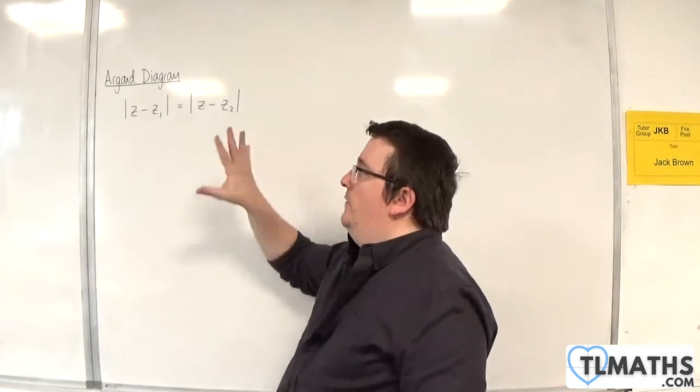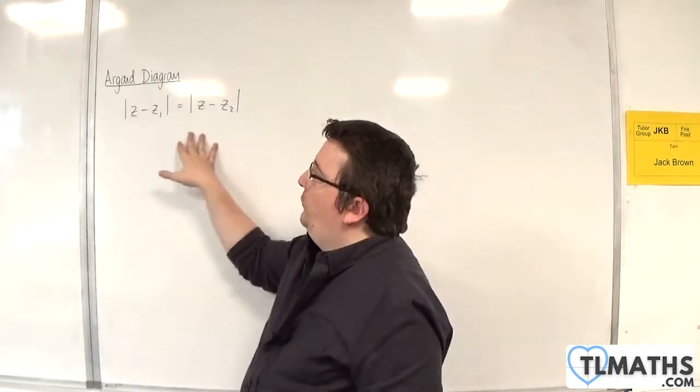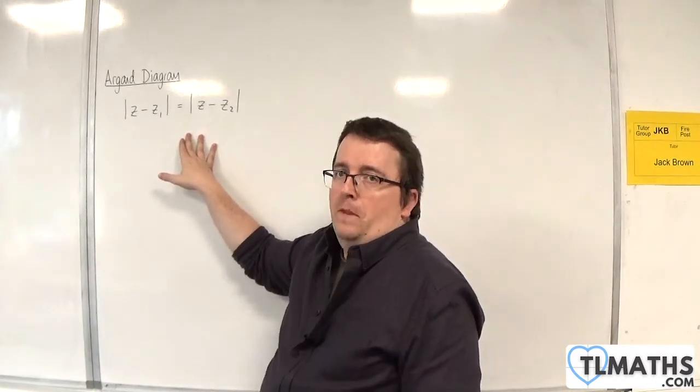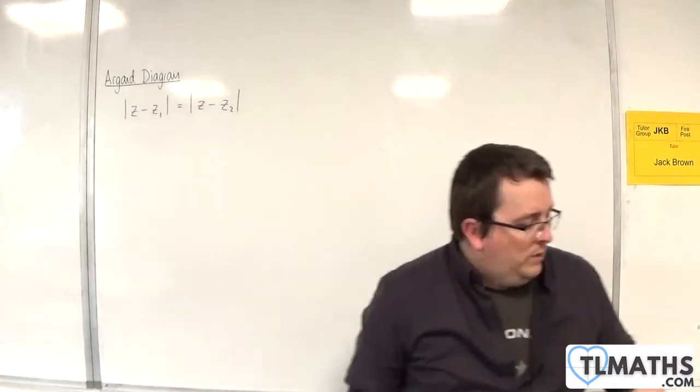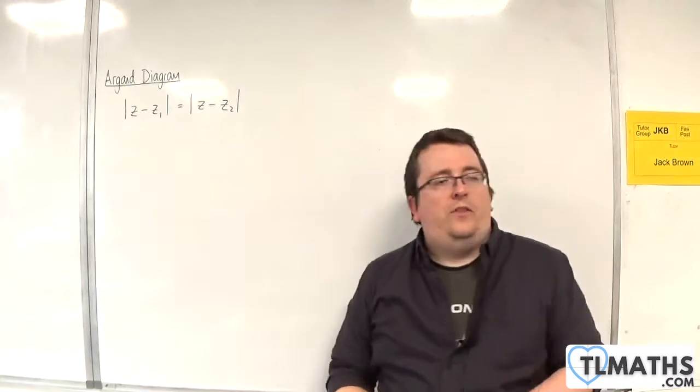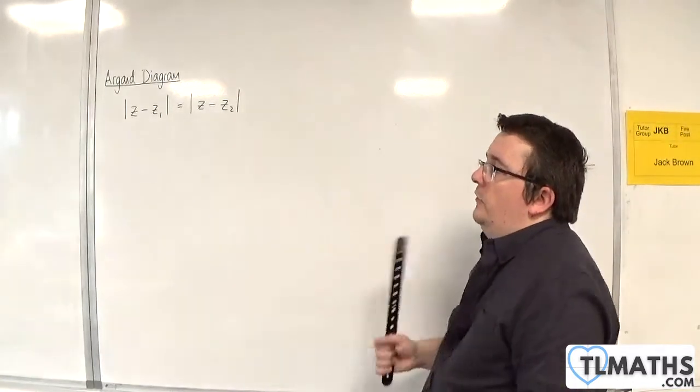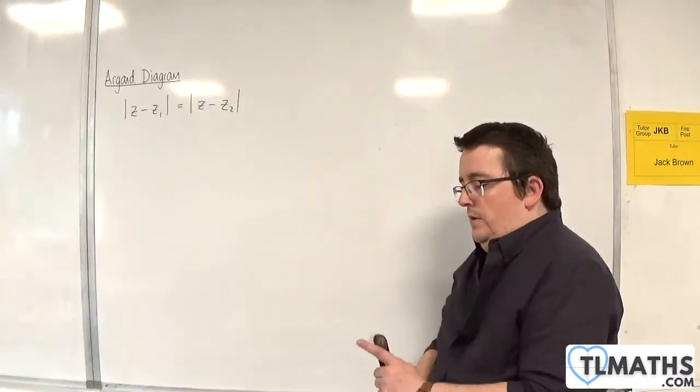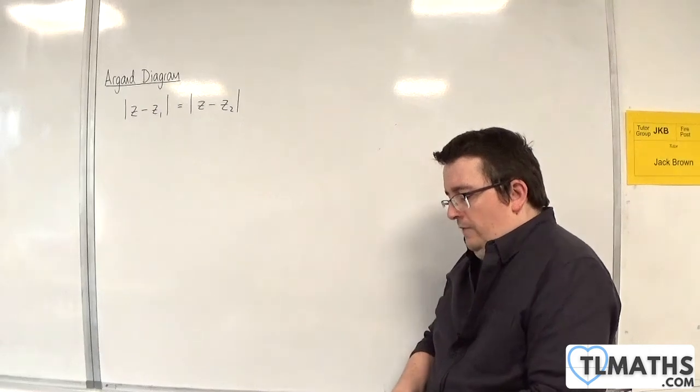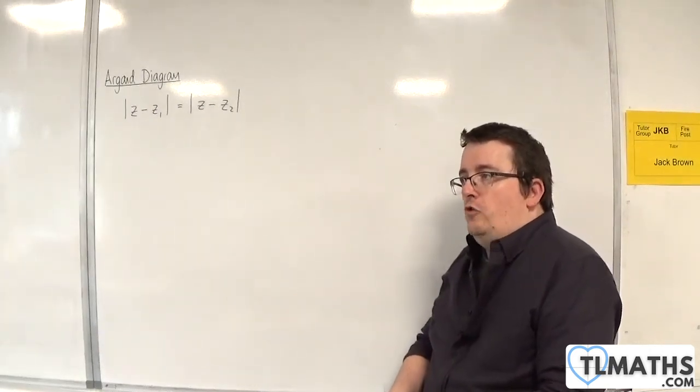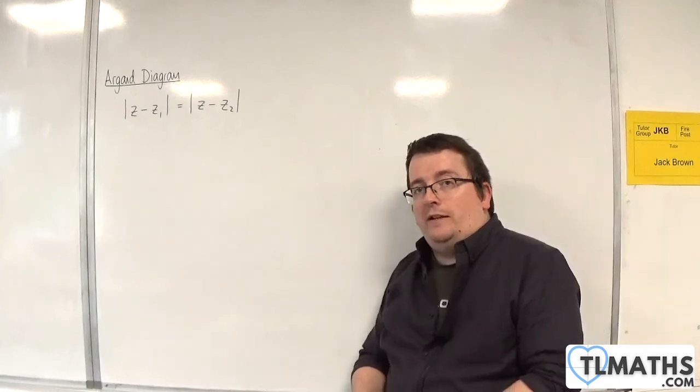So it's kind of like you've got two circles here. What I want you to do is think back to constructions. Have you ever done the construction for a perpendicular bisector?